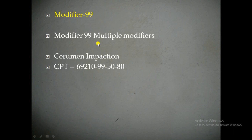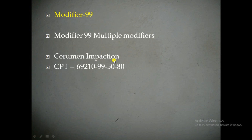Now we will see modifier 99. Modifier 99 is Multiple Modifiers. Whenever in a scenario multiple modifiers are appended, we can use modifier 99, but it is very rarely used. For example, in cerumen impaction surgery, the CPT code is 69210, and the surgery is performed on both sides — right ear and left ear.